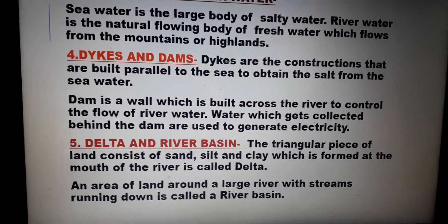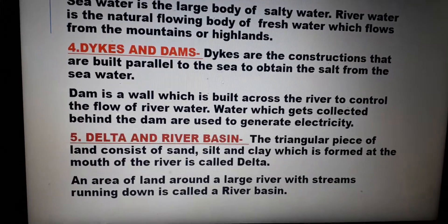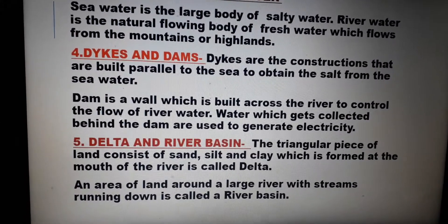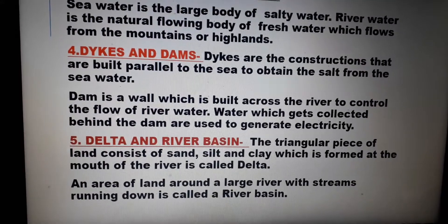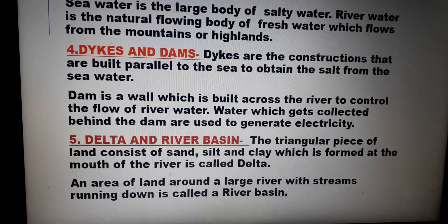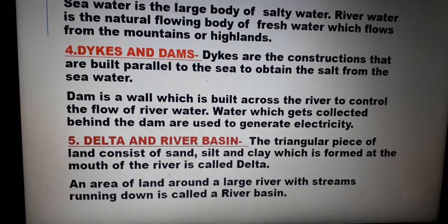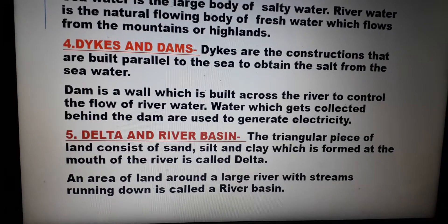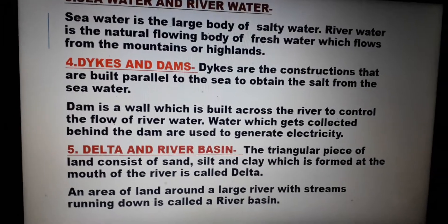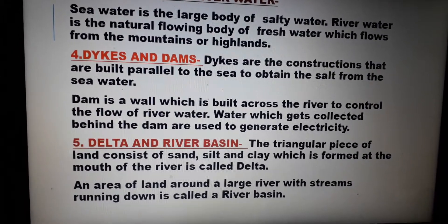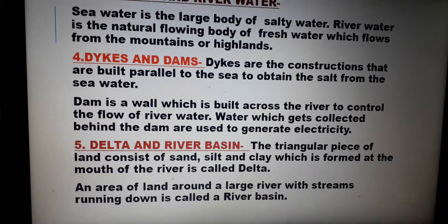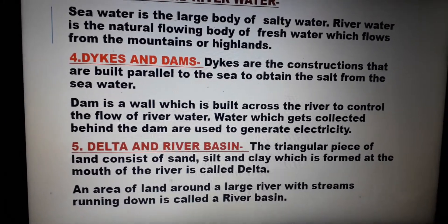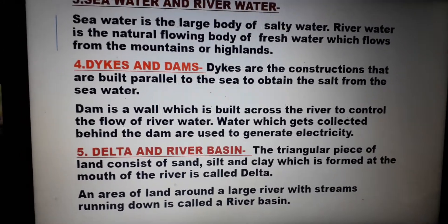The triangular piece of land consisting of sand, silt, and clay which is formed at the mouth of the river is called a delta. An area of land around a large river with streams running down is called a river basin.